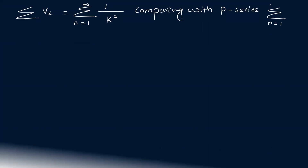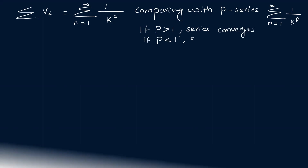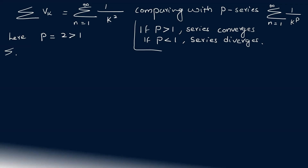We compare with the p-series: summation n equal to 1 to infinity of 1 by k raised to p. If p is greater than 1, the series converges; if p is less than 1, the series diverges. Here p equals 2, which is greater than 1, so summation of vk converges.